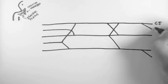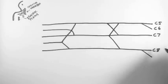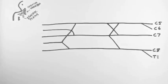So I'll label the nerve roots here. There's C5, 6, 7, 8 and T1 and these are the segments of the spinal cord from which these roots arise.